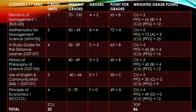For the Element of Management course (BUS 105), the student who wrote this exam has a score of 65. As established in the grading process, 65 is a B. For Mathematics for Management (MTH 105), the student has 72, which is an A. For the Study Guide for Distant Learners, the exam score was 65, so that's a B. For History and Philosophy of Science, the score was 60, so it's a B. Use of English and Communications scored 50, which is a C. Principles of Economics scored 49, which is a D.